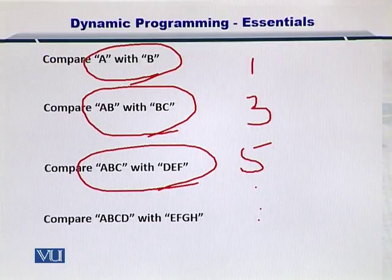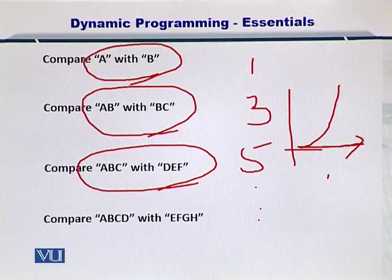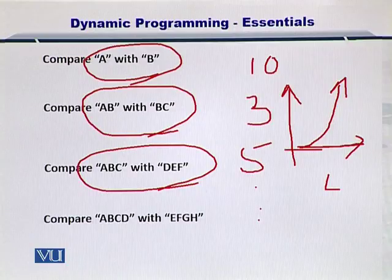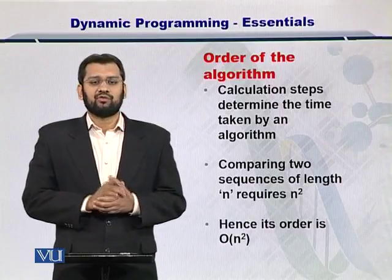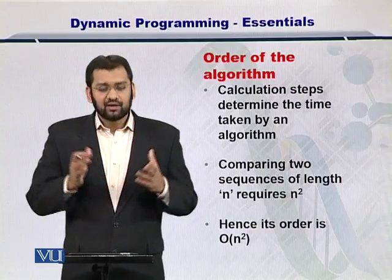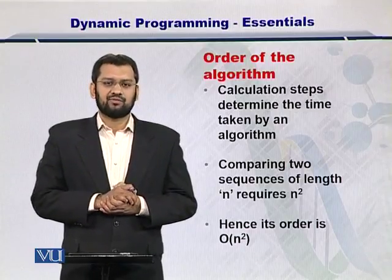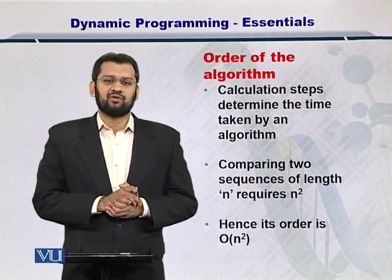This combination size continues to grow exponentially. As your sequence length increases, the number of operations you need climbs very sharply. Therefore, you need a technique which helps reduce this problem into a smaller problem. This is called order of the algorithm, where you calculate the steps in the algorithm while comparing strings. If you have two strings of length n, the order of the algorithm is considered to be n squared.